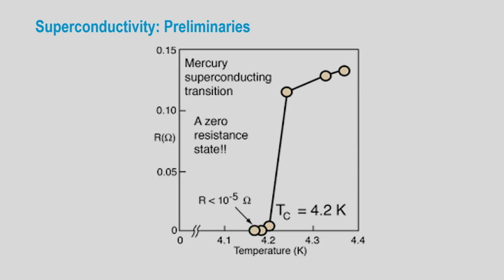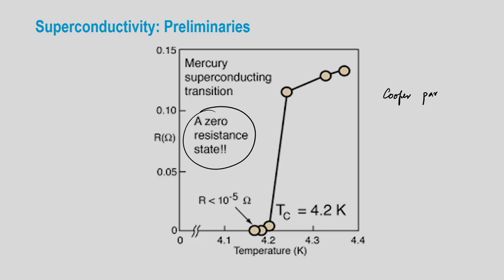The zero-resistance state means there are no free electrons colliding. Somehow the electrons become quiet particles that do not collide — something must have happened to the state. Below the transition temperature, Cooper pairs are formed. A Cooper pair is a bound state of an electron with spin up at wave vector k and an electron with spin down at wave vector minus k. This was elucidated through seminal work by Leo Cooper.